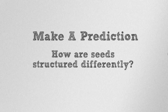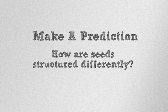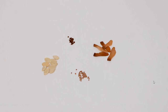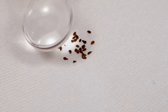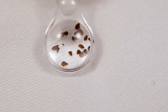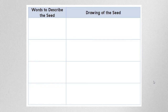Before you begin, make a prediction. How are seeds structured differently? Record your prediction. Begin by placing at least four different kinds of seeds on the paper towel. You'll use your hand lens to look closely at four different seeds, then describe and draw your observations on a data table.